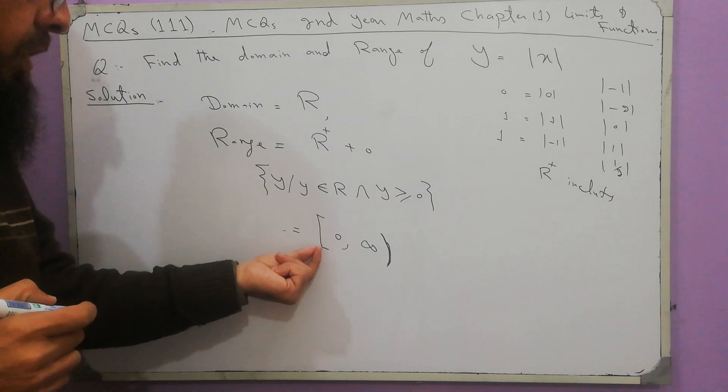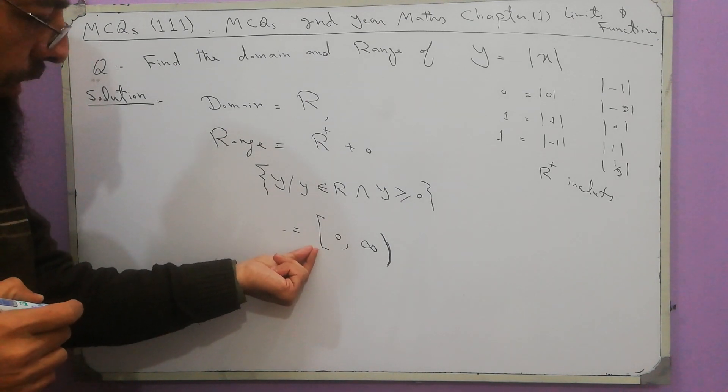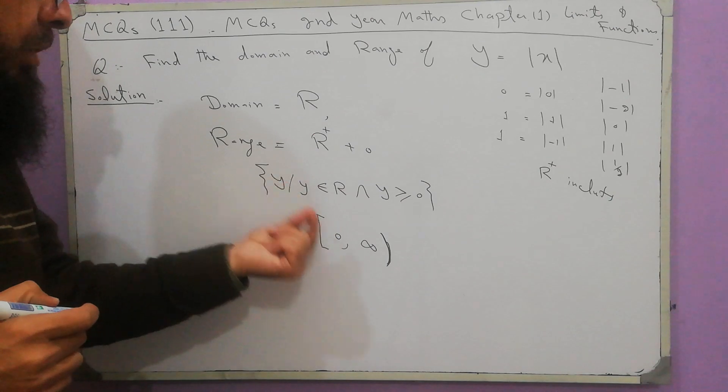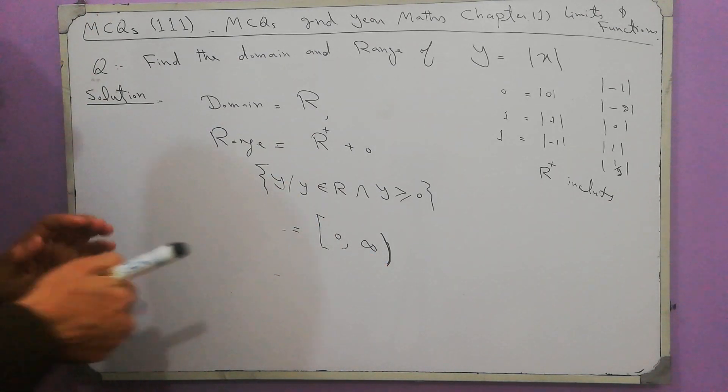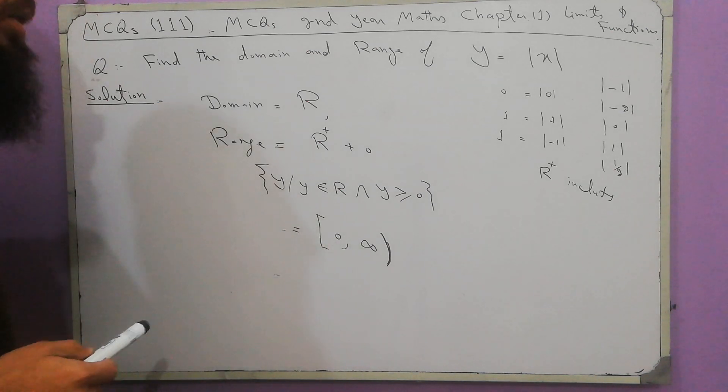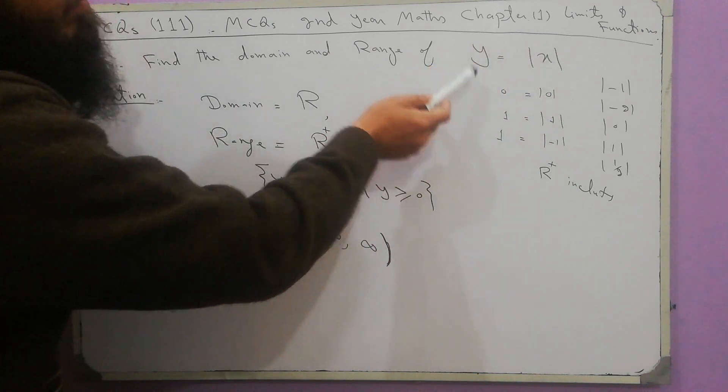0 to infinity but this is closed interval. Closed interval means that 0 is included and this is open interval. Open interval means that infinity is not included. 0 and all positive numbers are the range of this given function.